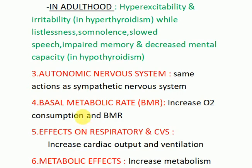The fourth action is on the basal metabolic rate: thyroid hormone increases oxygen consumption and basal metabolic rate in all tissues except the brain, gonads, and spleen. The resulting increase in heat production underlies the role of thyroid hormone in temperature regulation.